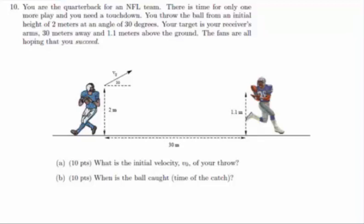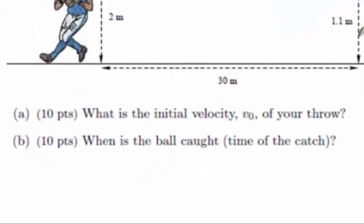Projectile motion, definition of success. Problem number ten: You are the quarterback for an NFL team. There is time for only one more play and you need a touchdown. You throw the ball from an initial height of two meters at an angle of 30 degrees. Your target is your receiver's arms, 30 meters away and 1.1 meters above the ground.